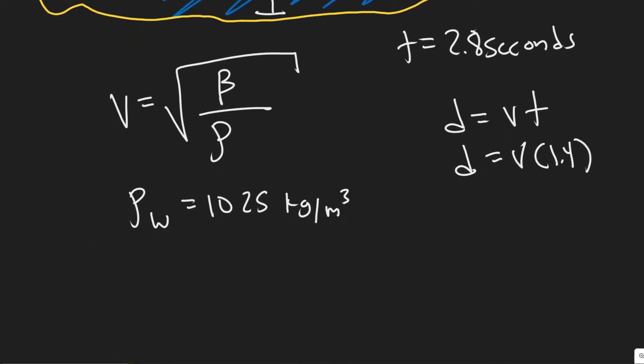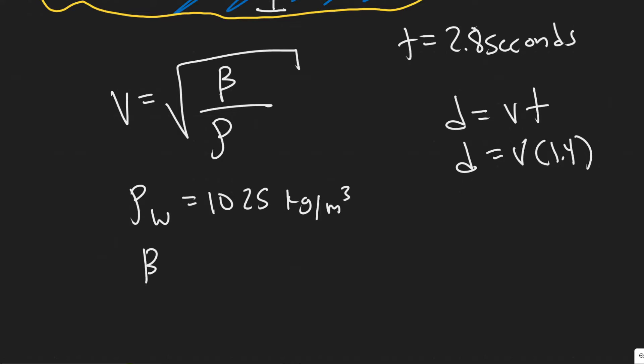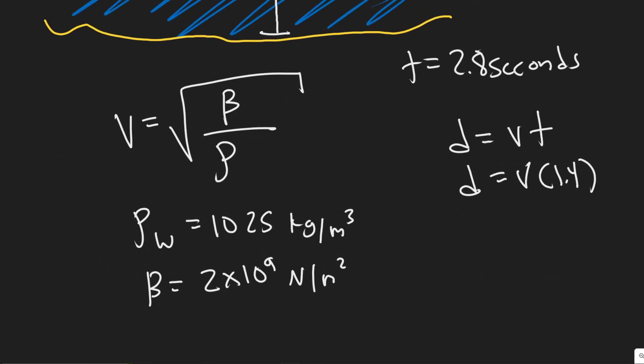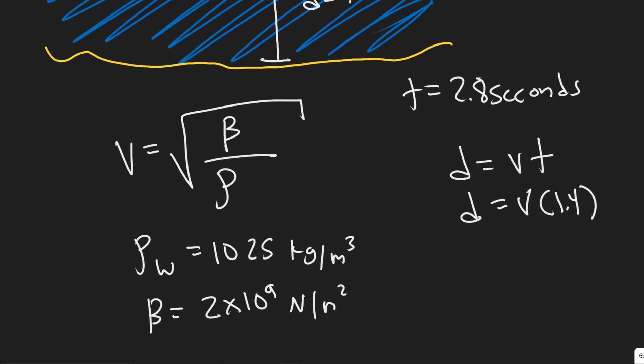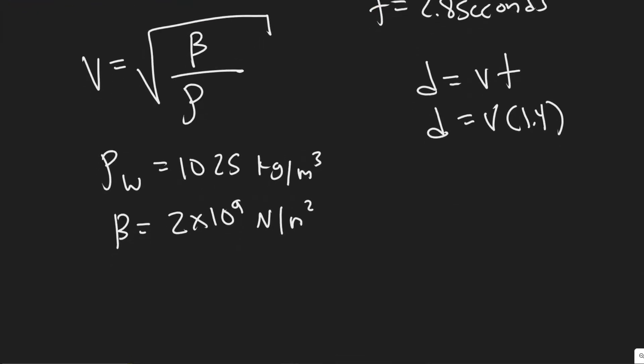What is the bulk modulus? The bulk modulus of water is 2 times 10 to the 9 pascals, which is the same as newtons per meter squared. So we know the bulk modulus and we know the density, and that gives us the velocity of sound when it travels through it.